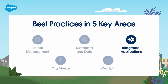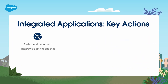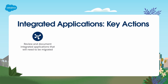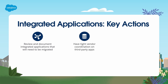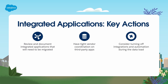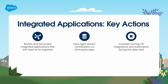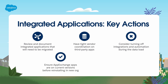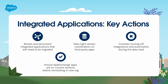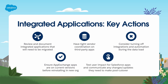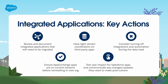Before an org migration, it's important to consider your integrated applications. Here are some key actions to take: review and document integrated applications that will need to be migrated. Have tight vendor coordination on third-party apps. Consider turning off integrations and automation during the data load — the Heroku Switch tool is a useful option to turn automation off and on easily. Be sure that you've updated any of your AppExchange apps and that they're on their current versions before reinstalling in the new org. Also make sure to test the user impact for Salesforce apps, including the Salesforce mobile app, Lightning for Outlook and Gmail, Salesforce Inbox, Files, and so on.